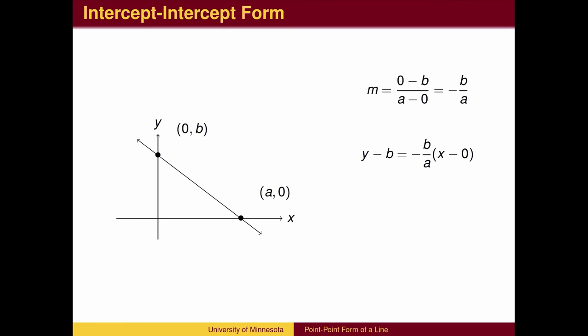A special case is when the two points are the x and y-intercepts. In this case, the slope is negative b over a.